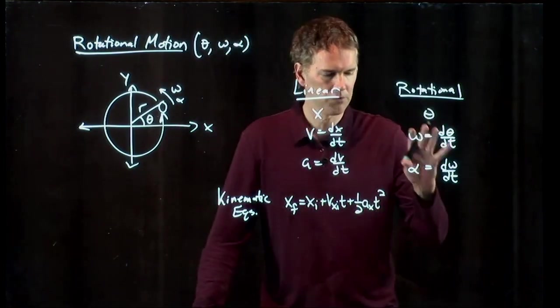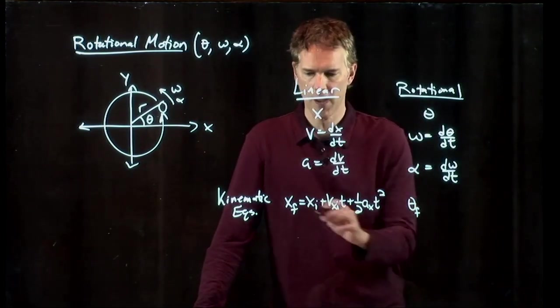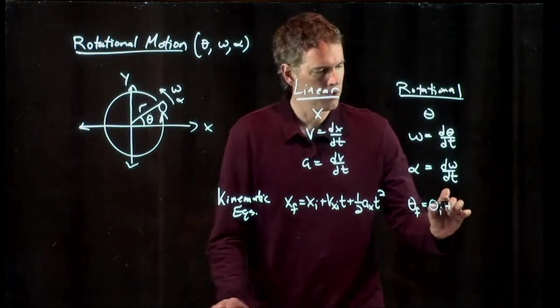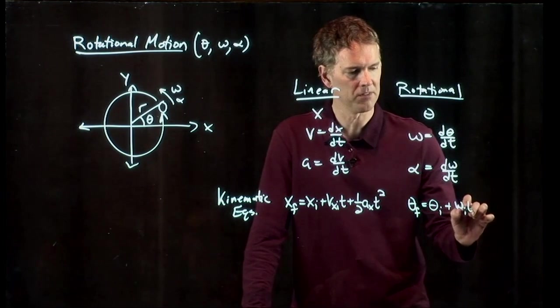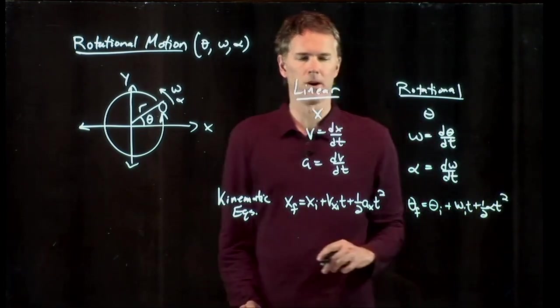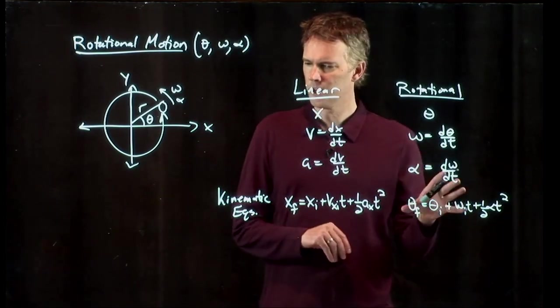And we can write the corresponding rotational equation like this: θ_f equals θ_i plus ω_initial times t plus 1/2 α t squared. All the math is exactly the same. We're just changing the variables.